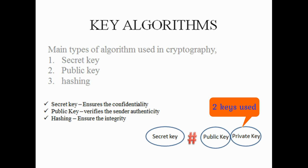Moving on to the public key type: in this type we use two kinds of keys — one is private and one is public — wherein each key is used accordingly to encrypt and decrypt the information.